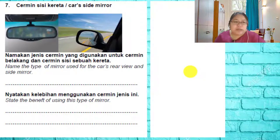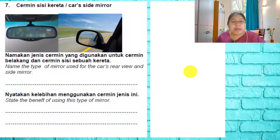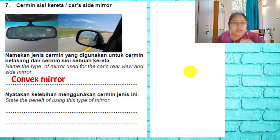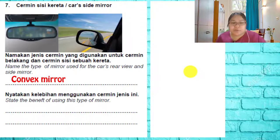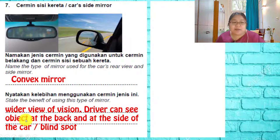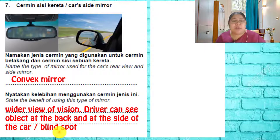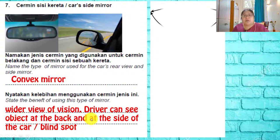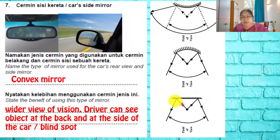The next part of question seven asks about the type of mirror used for a car's rear-view and side mirrors. A concave mirror only shows a small area, but the rear-view and side mirrors need to show a wider area, so we use a convex mirror. The benefit of a convex mirror is that the driver can see a wider field of view — seeing objects behind and to the side of the car, including blind spots.